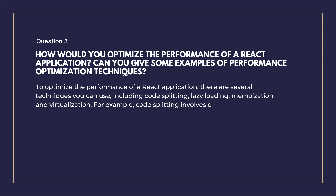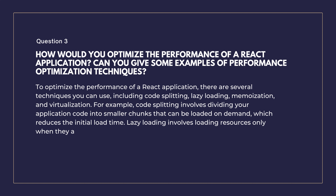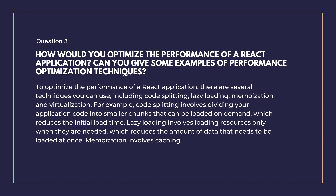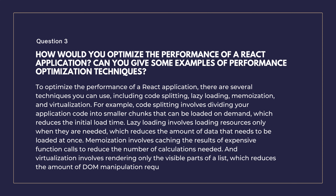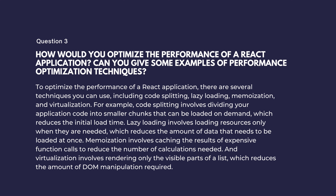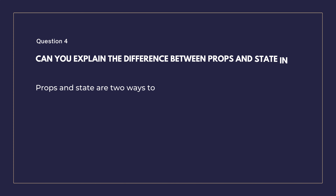How would you optimize the performance of a React application? To optimize performance, there are several techniques you can use including code splitting, lazy loading, memoization, and virtualization. Code splitting involves dividing your application code into smaller chunks that can be loaded on demand, reducing initial load time. Lazy loading involves loading resources only when they are needed. Memoization involves caching the results of expensive function calls, and virtualization involves rendering only the visible parts of a list to reduce DOM manipulation.